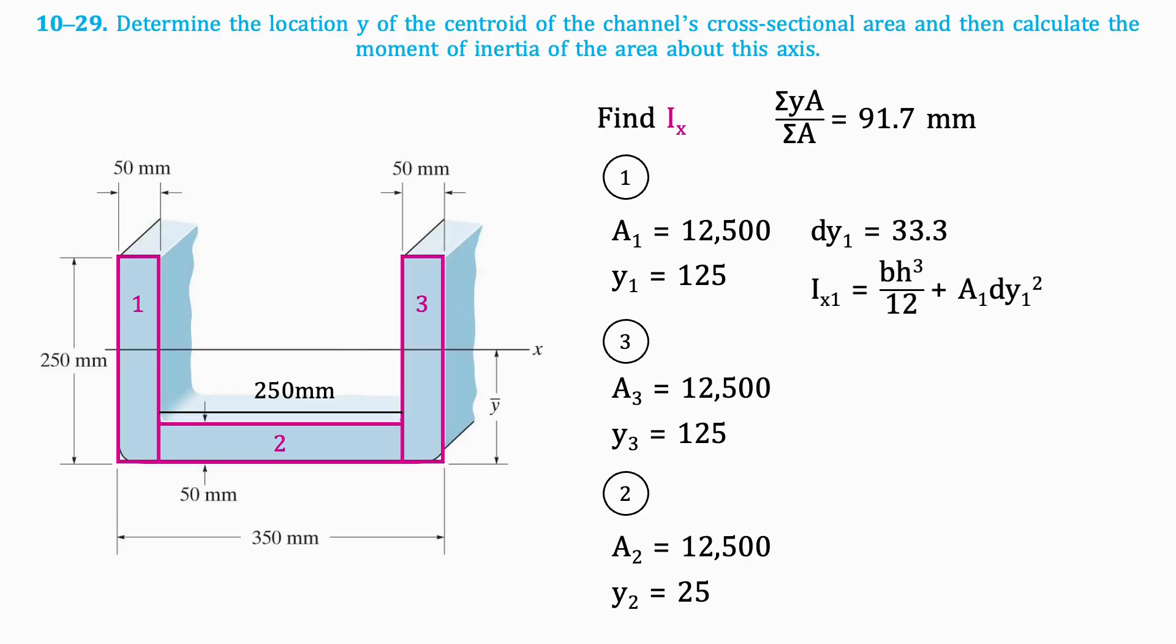Because we are finding the moment of inertia around a horizontal line, the first part of that formula is base times height cubed, divided by 12. This is a standard formula. The result is as follows.